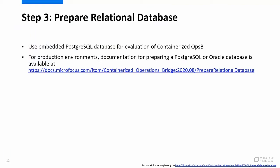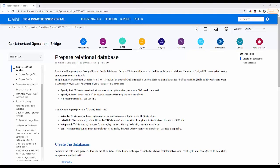Step 3 is to prepare a relational database. Containerized OpsB supports PostgreSQL and Oracle relational databases. Embedded PostgreSQL is supported by MicroFocus in non-production environments only — this is what we will use for the assessment of containerized OpsB. In a production environment, use an external PostgreSQL or external Oracle database. For more information, please go to the URL shown on the screen.